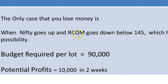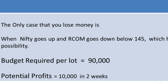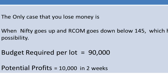The only case where you lose money is if Nifty goes up a lot and RCom doesn't go up, or if RCom goes down below 145 — which is a very unlikely possibility because RCom is extremely bullish right now, just like Nifty, and RCom has just today crossed the 76% level. Any rise in Nifty should definitely see RCom shoot up a lot. The budget required per lot is around 90,000 rupees, and the potential profit is 10,000 rupees in just one to two weeks — meaning you're making 10% returns within a week.